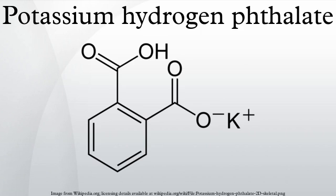Potassium hydrogen phthalate, often called simply KHP, is an acidic salt compound. It forms white powder, colorless crystals, a colorless solution, and an ionic solid that is the monopotassium salt of phthalic acid.